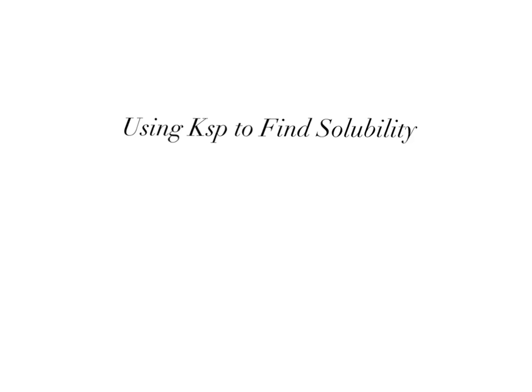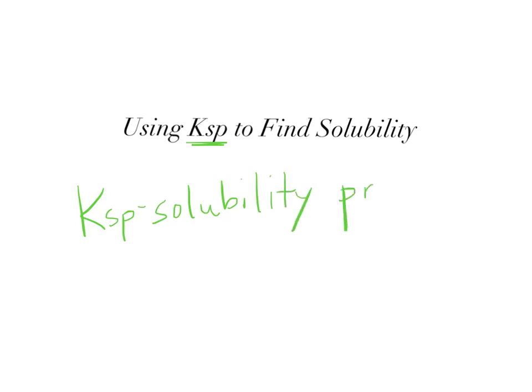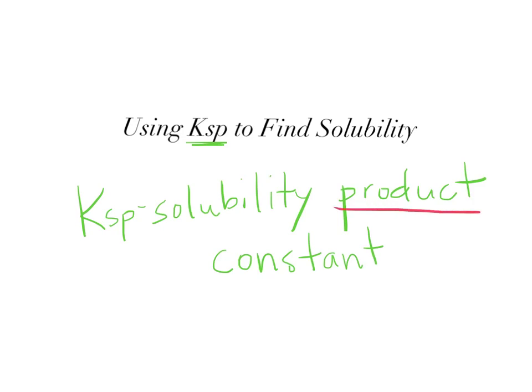Now that we know how to write net ionic equations for an insoluble substance, we're going to figure out how insoluble that insoluble substance is, and that's where Ksp comes into play. Ksp stands for the solubility product constant, and it is the product of the solubilities of the aqueous ions that are dissolved in solution.